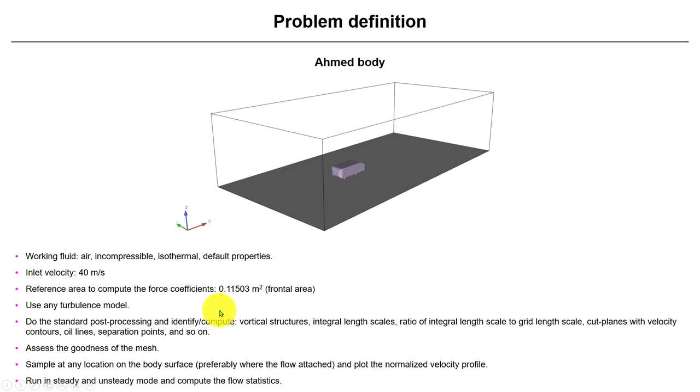Then also when you try to assess the goodness of the mesh, if you are going to do your own mesh, try to do different meshes and see how results change according to the mesh. By the way, the mesh that we're giving is a wall modeling mesh. You can go ahead and use a wall resolved mesh. Also try to do some sampling at any location on the body surface or in the domain, just to plot normalized velocity. You can run in steady state or unsteady, but remember that you need to compute your statistics.